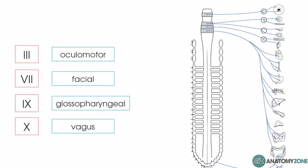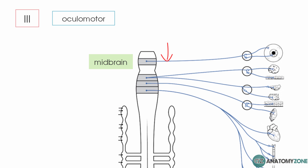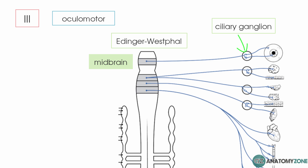The first cranial component is the oculomotor nerve, cranial nerve 3, which has its origin in the midbrain at the Edinger-Westphal nucleus. The oculomotor nerve extends to the ciliary ganglion in the periphery, which innervates the ciliary muscle to bring about accommodation of the lens and causes constriction of the pupil.